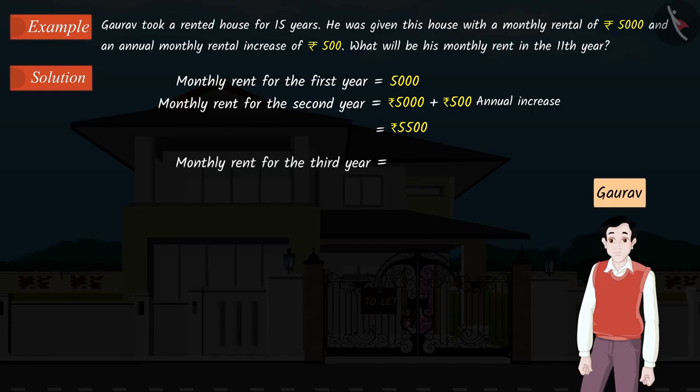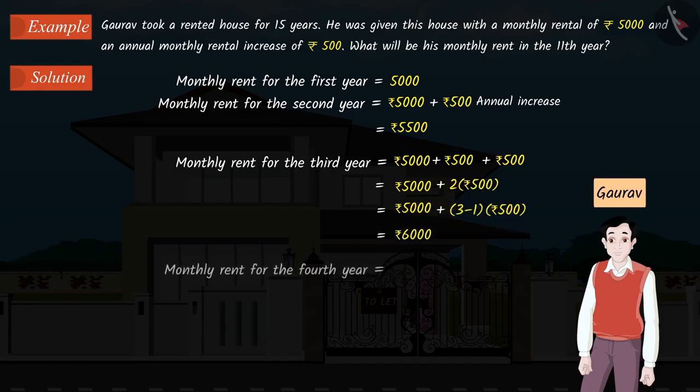Similarly, we can find the monthly rent for the third year by adding Rs. 500 to the rent of the previous year. Similarly, we can also find the monthly rent for the fourth year.